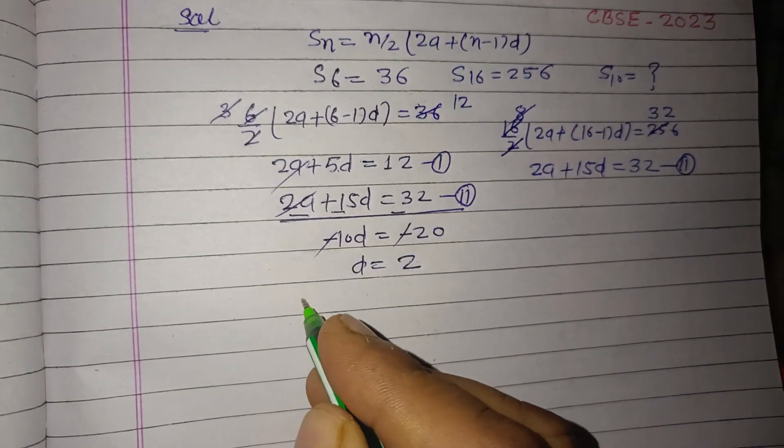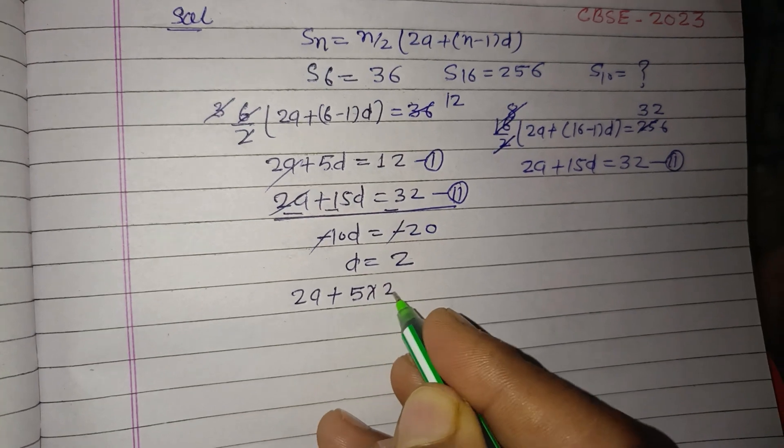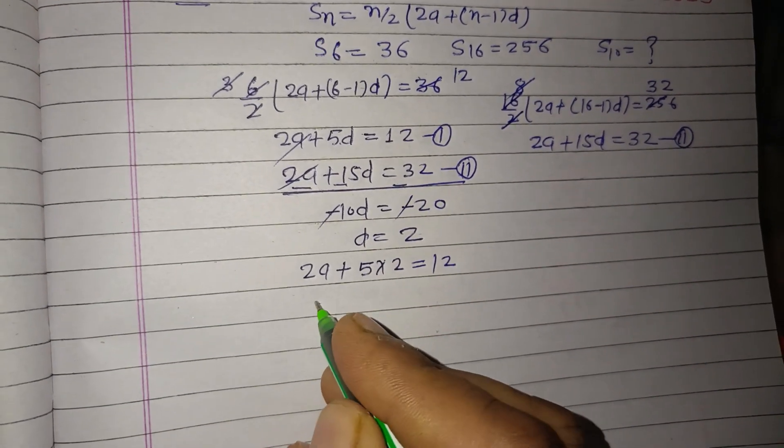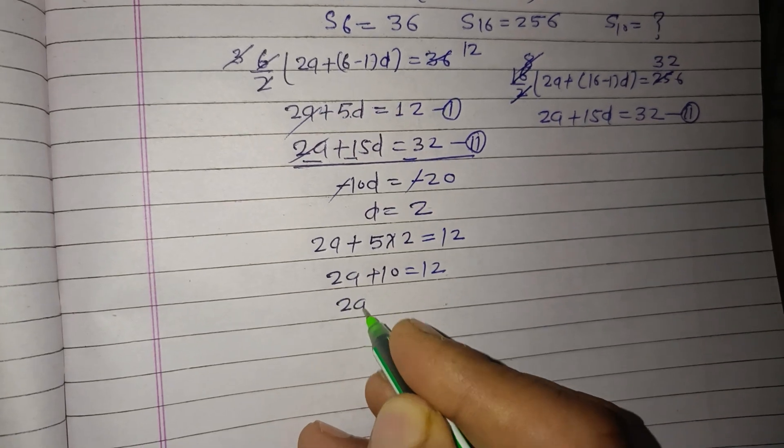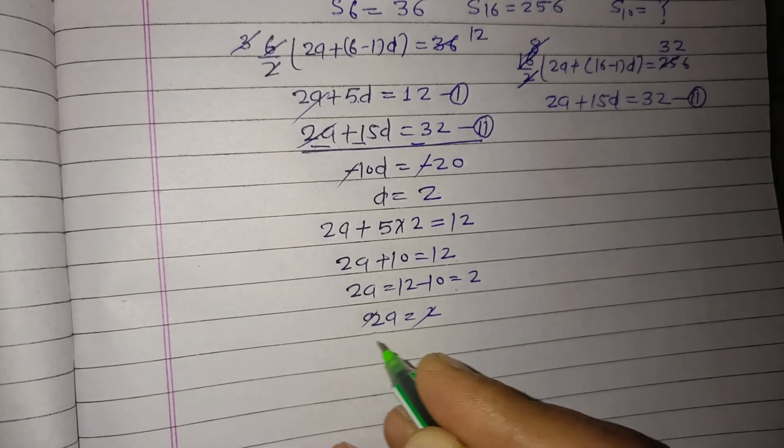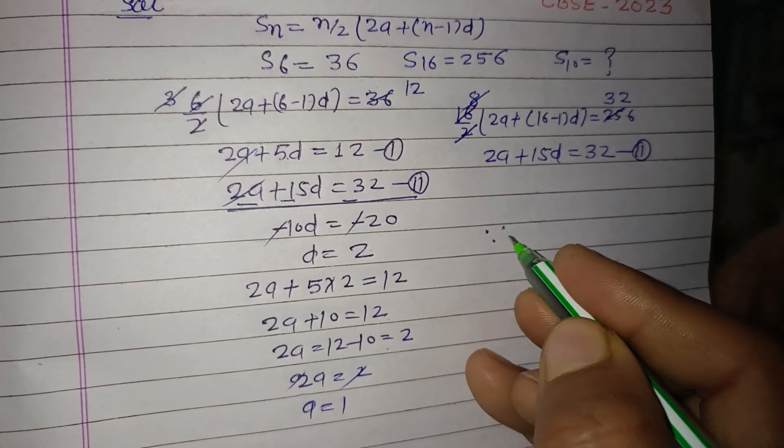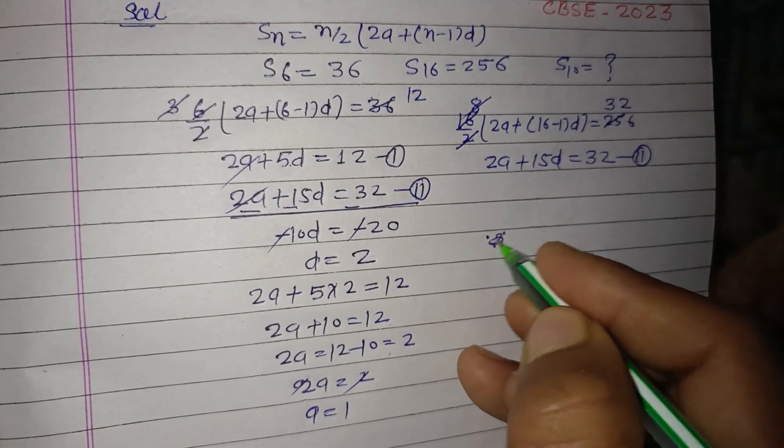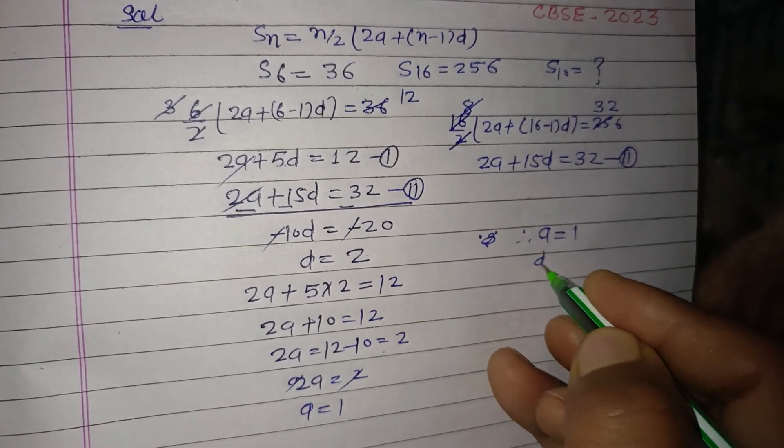With d equal to 2, we can substitute into 2a + 5d equals 12. This gives 2a + 10 equals 12, so 2a equals 2. Therefore a equals 1.